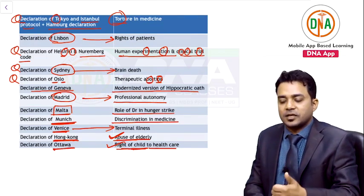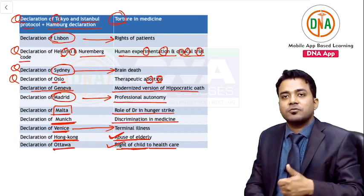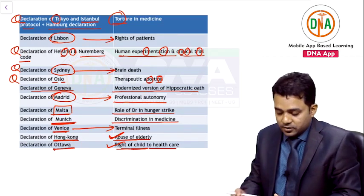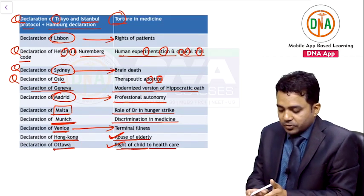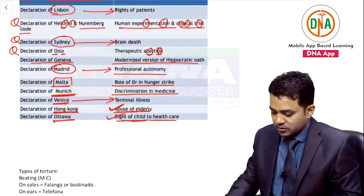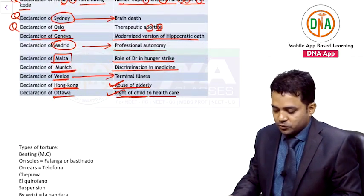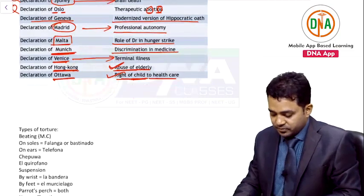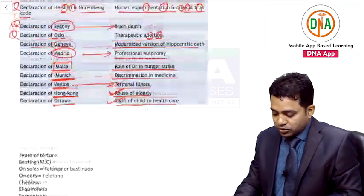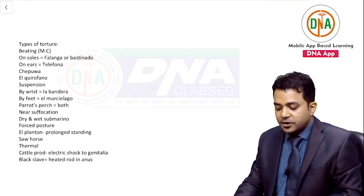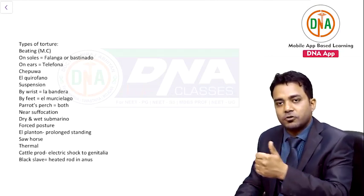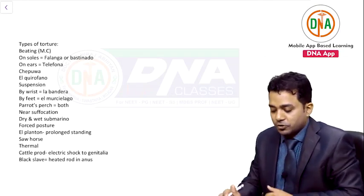This is your first and most important table because questions directly come from it — revise it again and again. Now let us revisit torture: which declaration is related to torture? Tokyo — T for torture, T for Tokyo.